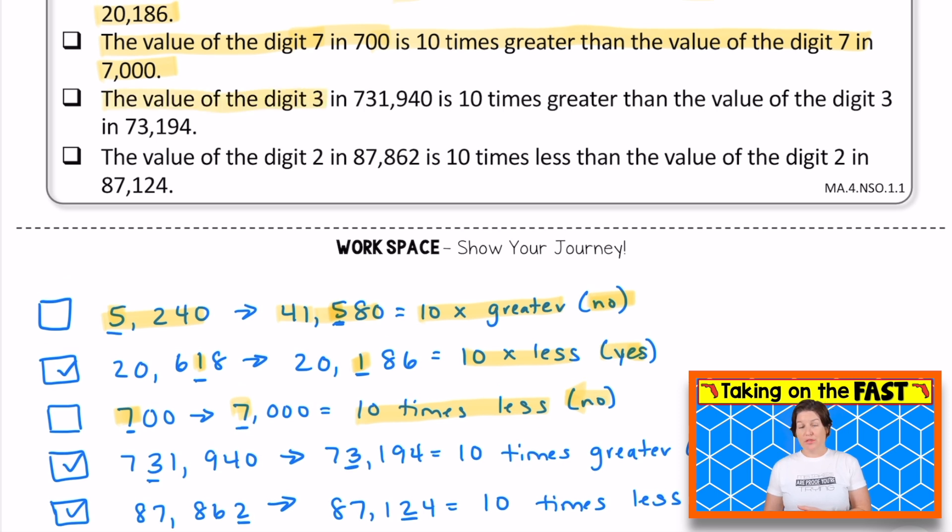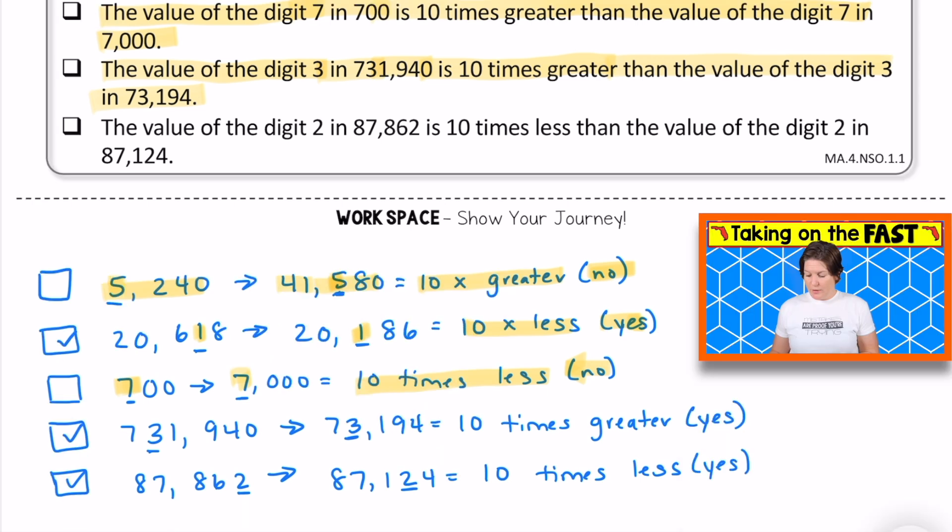We have the value of the digit three in 731,940 is 10 times greater than the value of the digit three in 73,194. Now I do want to point out real quick that this is a lot. It's a lot of talking here. And so it's really important that we're taking that information off to show our journey, taking it and putting it onto paper in a similar way to what I've done. That's a great way to be thinking about this. So we're talking about the digit three in the two numbers that were provided. And that first three is indeed 10 times greater. It's in the 10,000 place, whereas the other one is in the thousands place. So yes, this one is a correct answer.